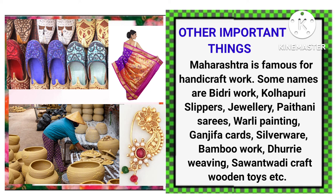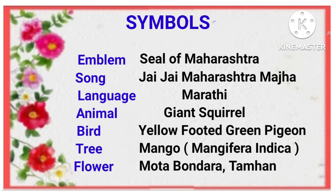Symbols and emblem: Seal of Maharashtra, song: Jai Jai Maharashtra Majha, language: Marathi, animal: Giant Squirrel, bird: Yellow-footed Green Pigeon, tree: Mango (Magnifera Indica), flower: Motabundara (Tamhan). Thanks for watching.